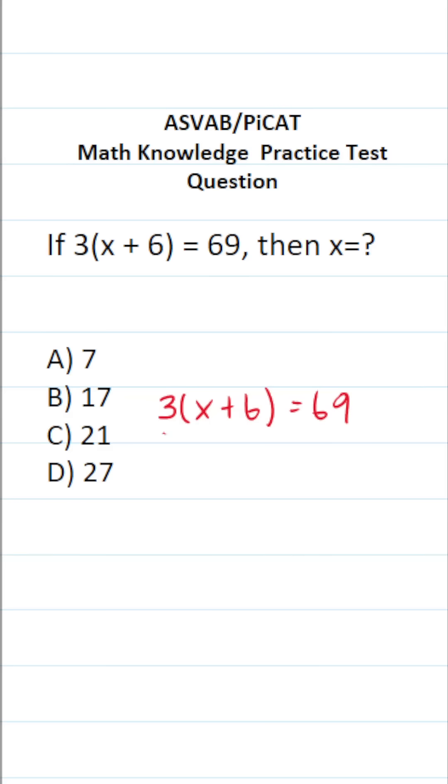To solve this equation, the first thing I'm going to do is divide both sides by 3. This crosses out, leaving us with x plus 6 equals. You should be able to do this part mentally. 69 divided by 3: 6 divided by 3 is 2, 9 divided by 3 is 3.